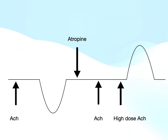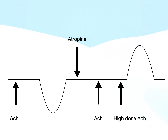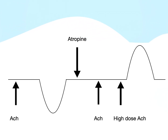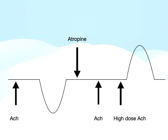Stimulation of sympathetic ganglia leads to an increase in sympathetic output, which leads to increased noradrenaline release. The same phenomenon is responsible for release of adrenaline from the adrenal medulla, and this is also responsible for the rise in blood pressure after giving a high dose of acetylcholine.